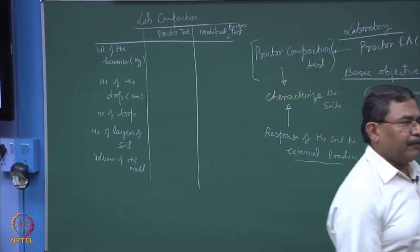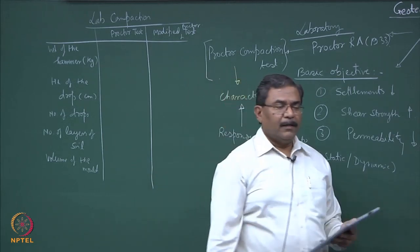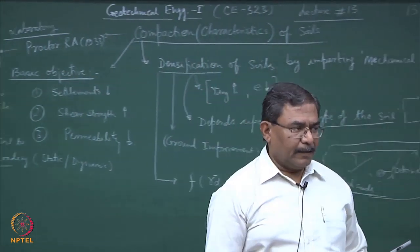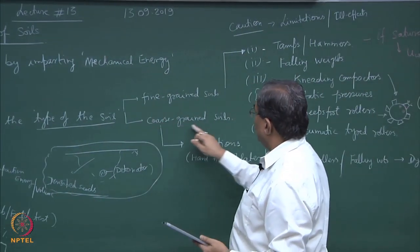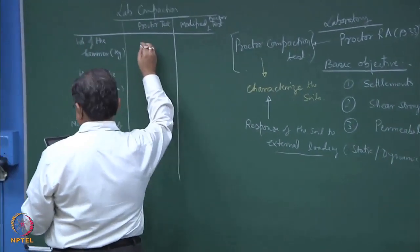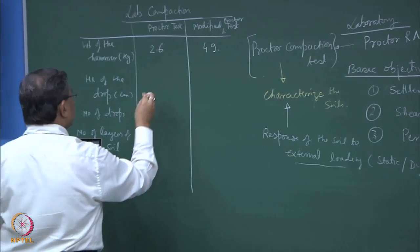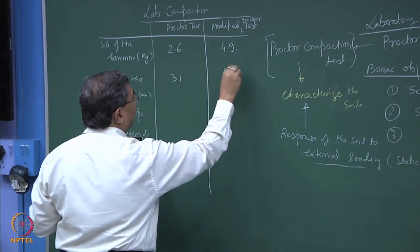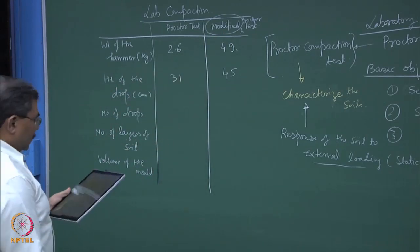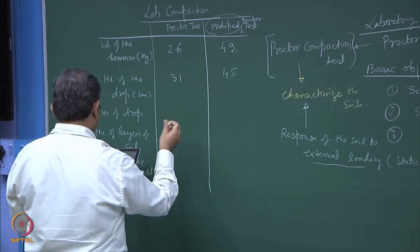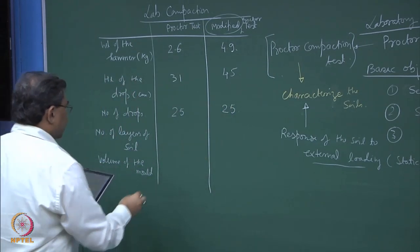Basically you are mimicking in the lab what can be done in the field by creating conditions in the laboratory. Unfortunately, whatever can be done in the field cannot be 100 percent replicated in the laboratory — particularly for materials which require vibrations. It is very difficult to do vibration of coarse-grained soils in a Proctor test. Number of drops are normally 25 and number of layers are 3 for standard and 5 for modified Proctor.